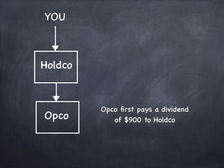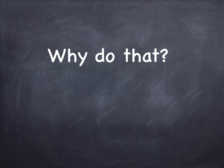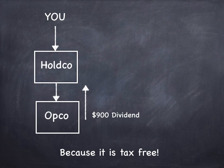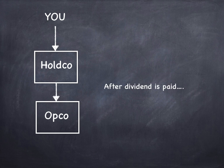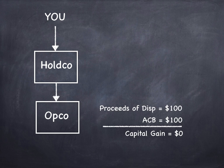What if the OpCo first paid a dividend of $900 up to the HoldCo? Why do that? Well, it's tax-free in many cases to flow dividends from one company to the other — at least it used to be. And then after the tax-free dividend is paid, the fair market value of the OpCo is going to be reduced by $900 down to $100. And since the ACB is also $100, your capital gain is going to be zero.